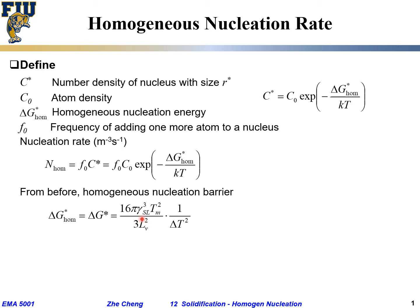In that formula, γSL is the interfacial energy between the solid and the liquid, Tm is the equilibrium melting temperature, Lv is the latent heat per unit volume during solidification, and ΔT is the undercooling — how far the temperature is below the equilibrium melting temperature. A larger undercooling ΔT results in a smaller nucleation barrier.